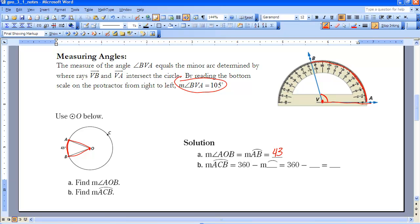But now we want to find the measure of major arc ACB. That's the other direction, the ACB. And we know that the whole circle is 360 degrees, so we want 360 degrees minus the arc measure of 43. So if we take 360 degrees minus 43, that will give us 317 degrees.